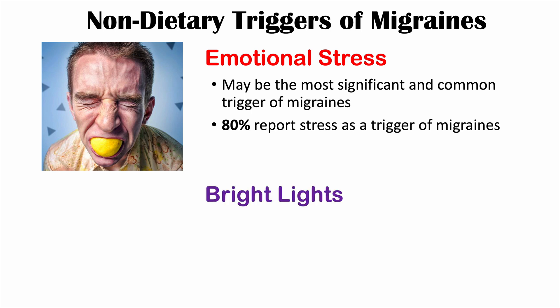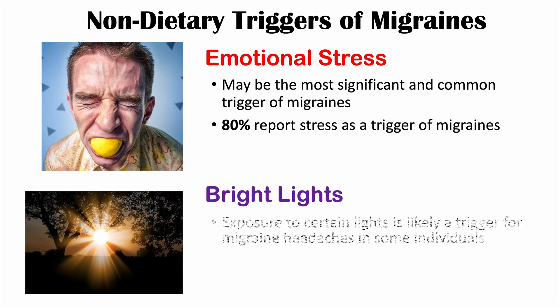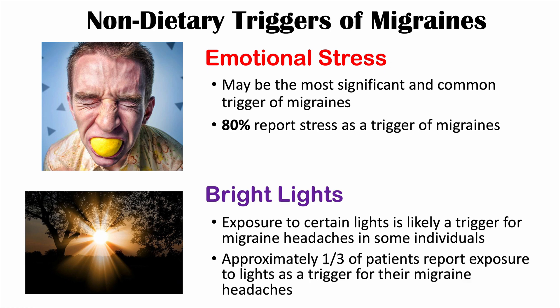Another trigger of migraines is bright lights. Exposure to certain lights is likely a trigger for migraine headaches in some individuals. We noted that being in a dark room helps patients with migraines, so bright lights can actually trigger migraines in some individuals. Approximately one third of patients who get migraines report exposure to lights as a trigger.